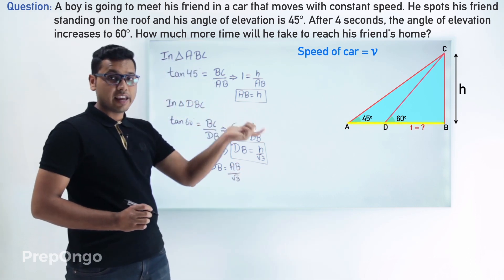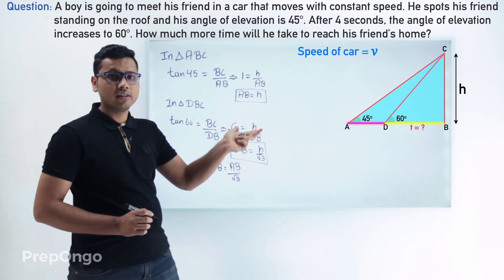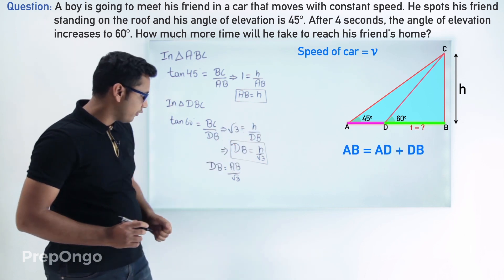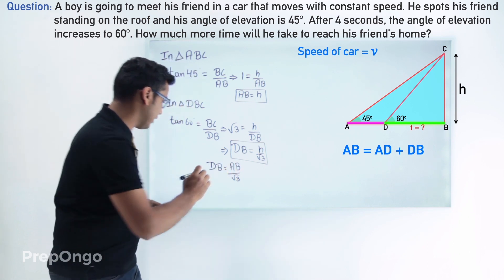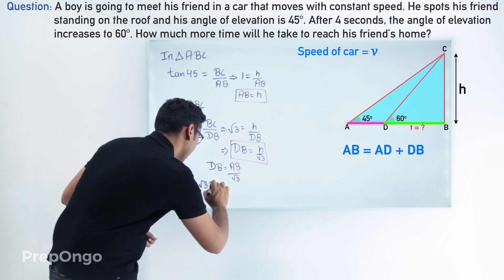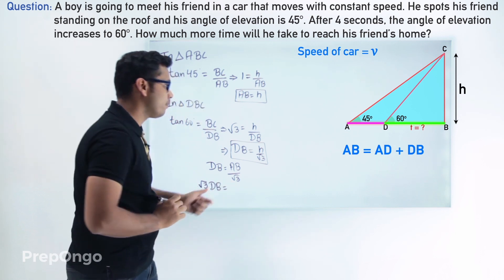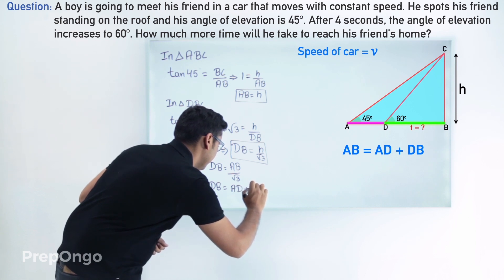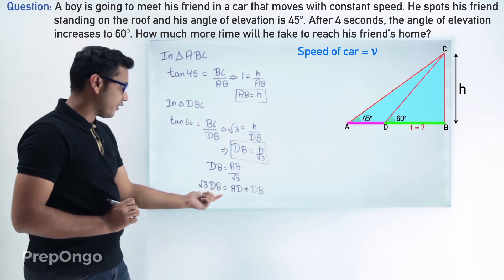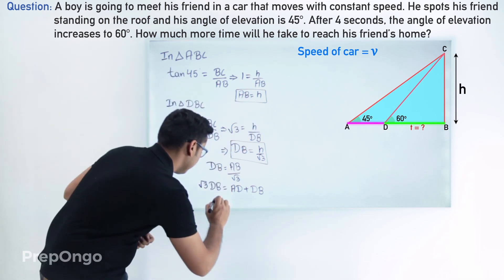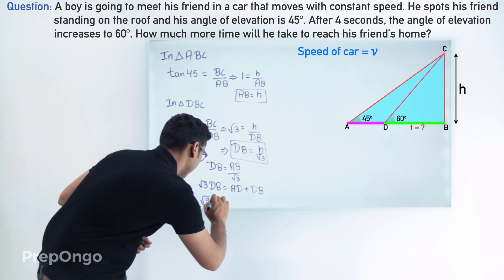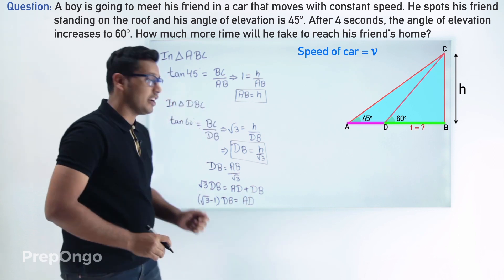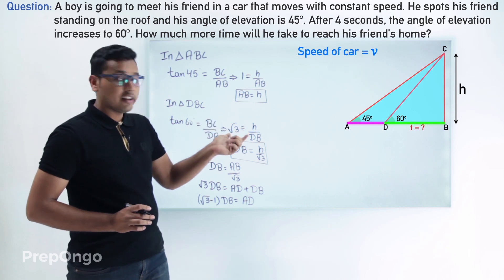The length AB is the sum of AD and DB, so we can write AB as AD plus DB. Cross-multiplying: √3 · DB equals AD plus DB, which gives (√3 − 1) · DB equals AD.